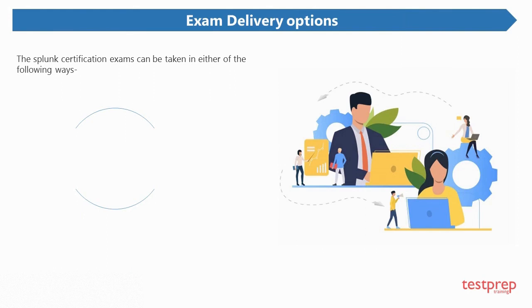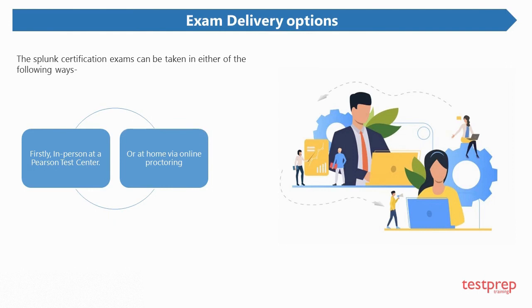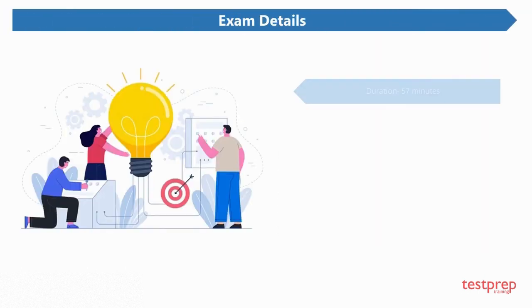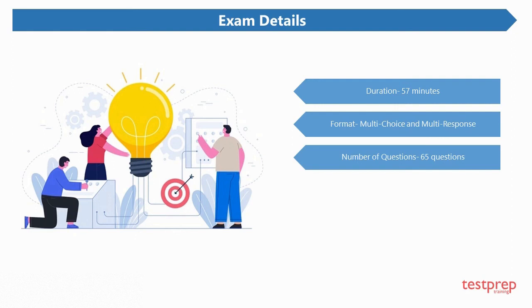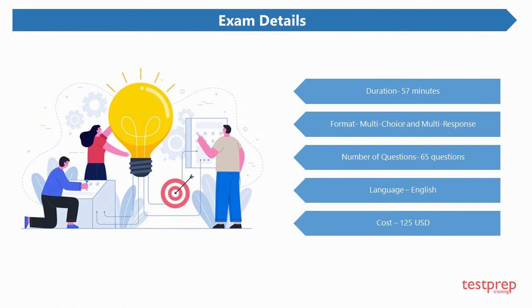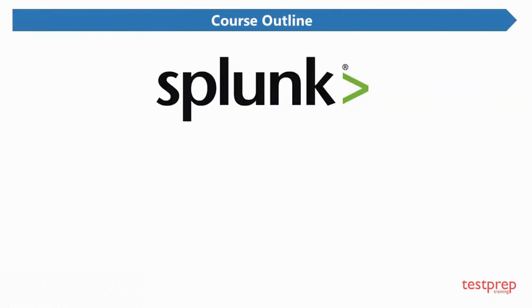Exam delivery options: Splunk certification exams can be taken in either of the following ways — firstly, in person at a Pearson Test Center, or at home via online proctoring. Exam details: duration is 57 minutes, format is multi-choice and multi-response, number of questions is 65, language is English, and cost is $125 US dollars.